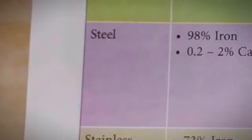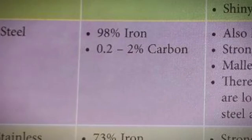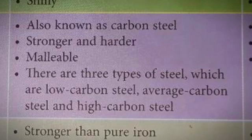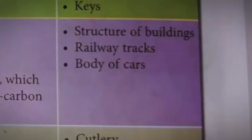Steel is made up of 98% iron and 0.2 to 2% carbon, and is also known as carbon steel. It is stronger and harder than iron, and malleable. There are three types of steel: low carbon steel, average carbon steel, and high carbon steel. Steel is used in the structure of buildings, railway tracks, and the body of cars.